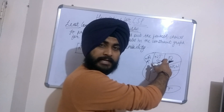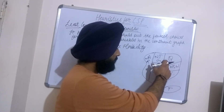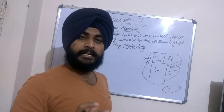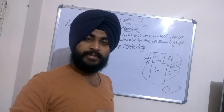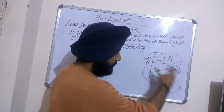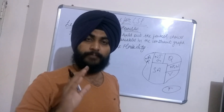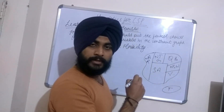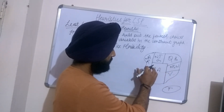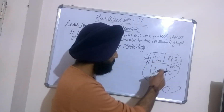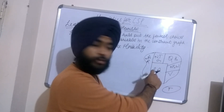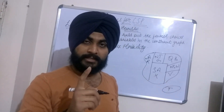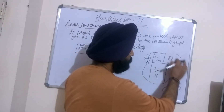According to this heuristic, we should select the next variable and assign it a value such that the number of constraints on the neighboring variables is minimized. Suppose we have to assign a value to Queensland. If we assign Queensland the color blue, then we can see that red, green, and blue are all taken, and Southern Australia has no color left.